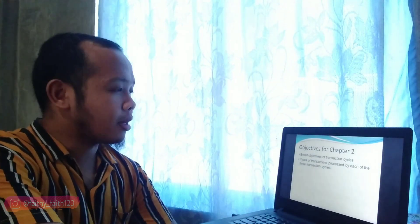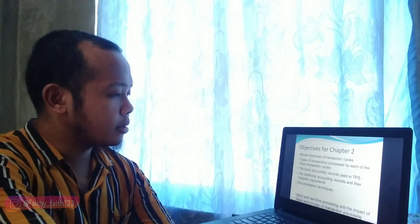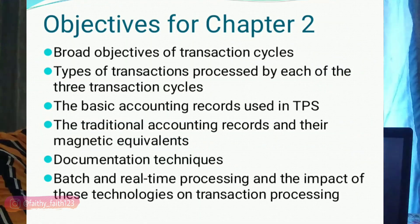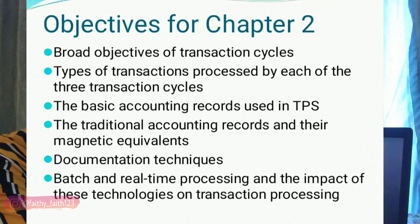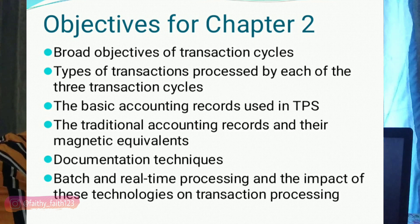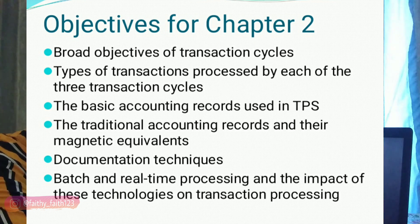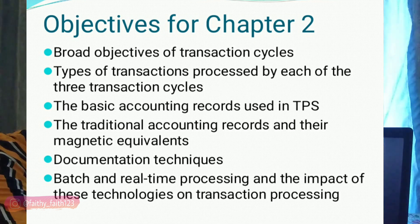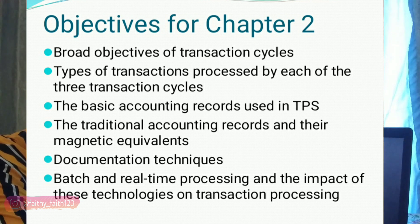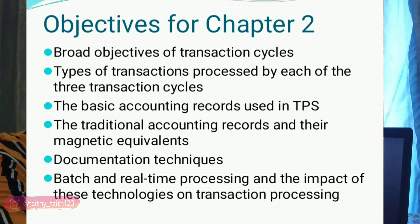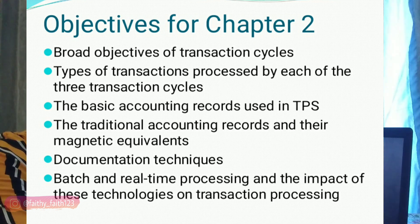Our objectives for the chapter are as follows: broad objectives of transaction cycles; types of transactions processed by each of the three transaction cycles; basic accounting records in transaction processing; traditional accounting records and their magnetic equivalence; documentation techniques; batch and real-time processing; and the impact of these technologies on transaction processing.